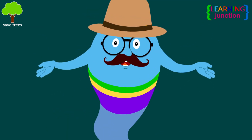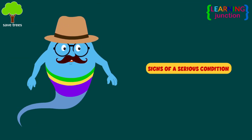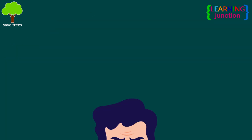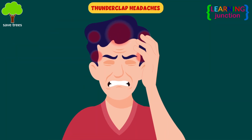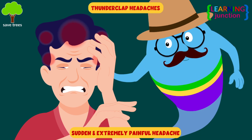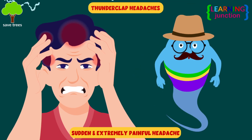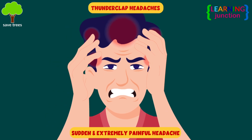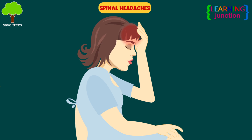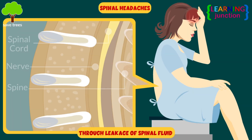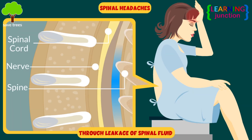Some types of secondary headaches that can be signs of a serious condition include: Thunderclap headaches — this is an extremely painful headache that comes on suddenly, like a clap of thunder. These headaches can warn of potentially life-threatening conditions. Spinal headaches — these headaches are caused by leakage of spinal fluid through a puncture hole in the membrane that surrounds the spinal cord.